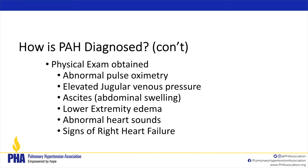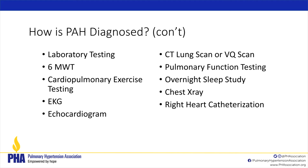The physical exam is key. We look at your pulse oximetry, elevated jugular venous pressure in the neck veins, ascites or abdominal swelling, lower extremity edema — ankle swelling, dependent edema in the thighs or legs. We also listen for abnormal heart sounds associated with PAH and look for signs of right heart failure, such as swelling, ascites, and shortness of breath.